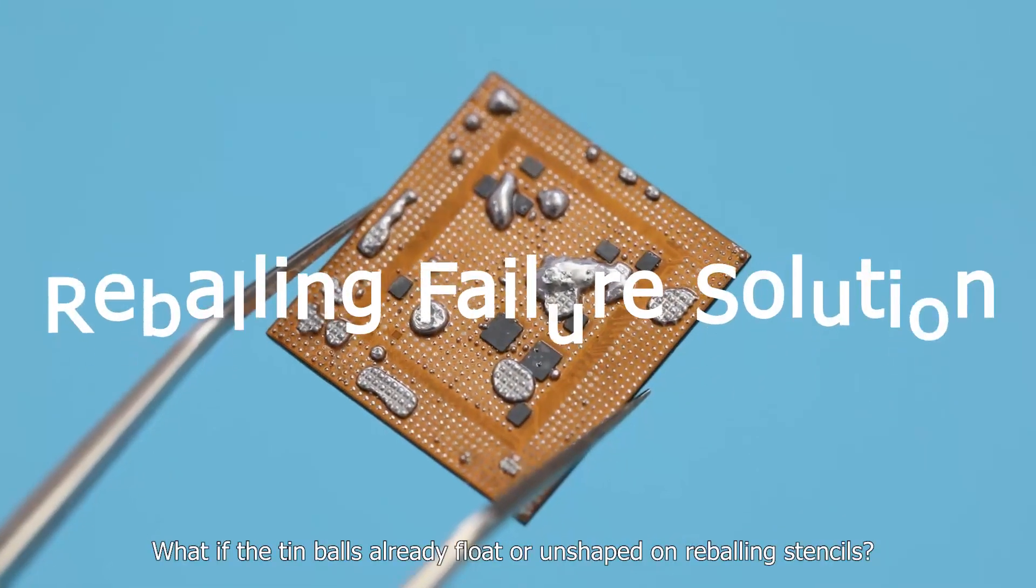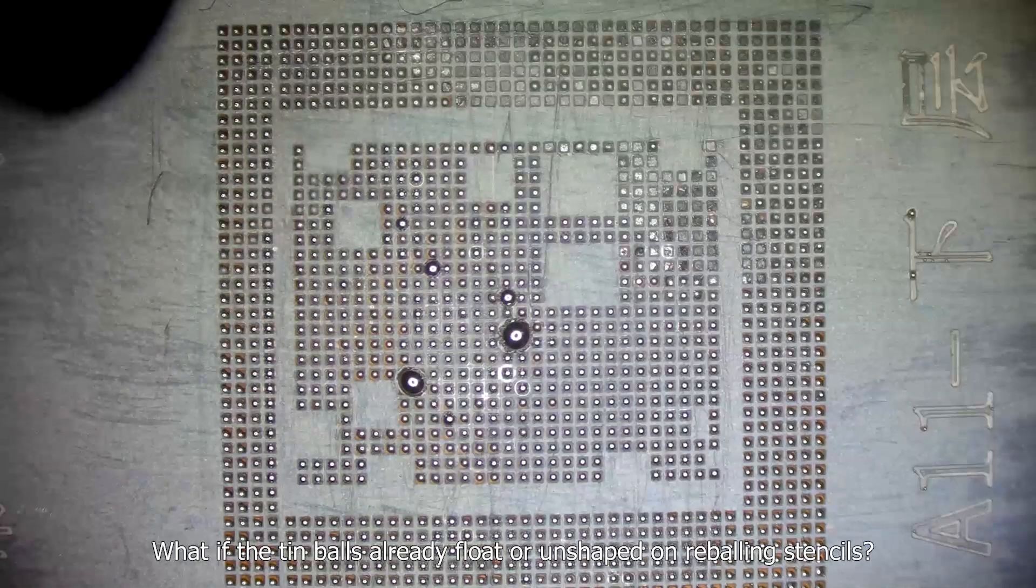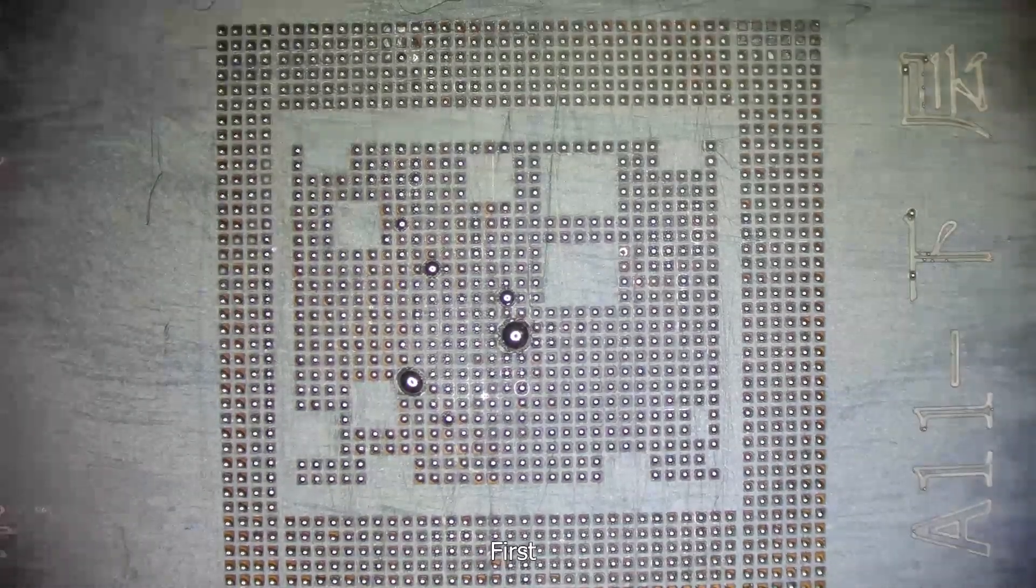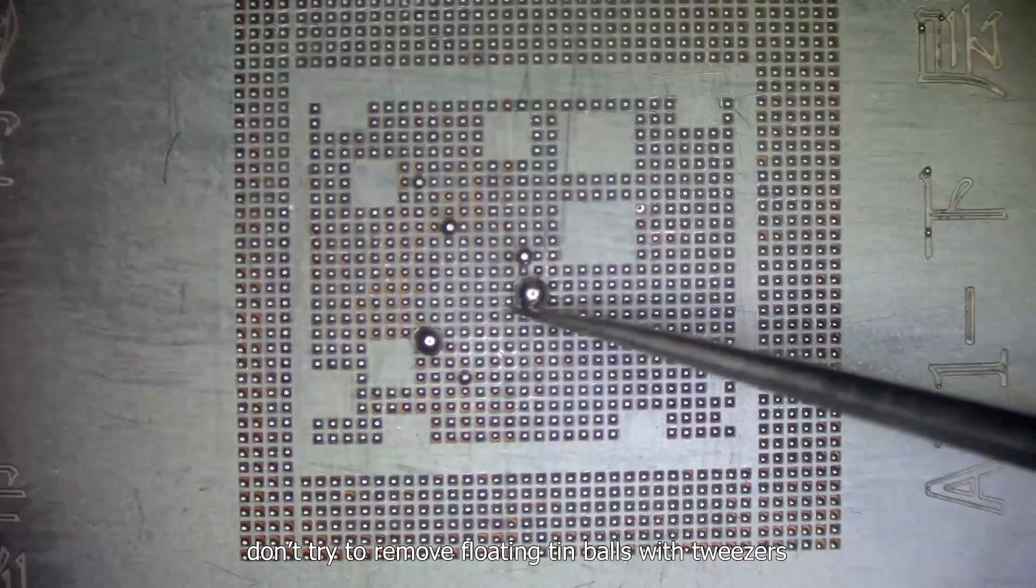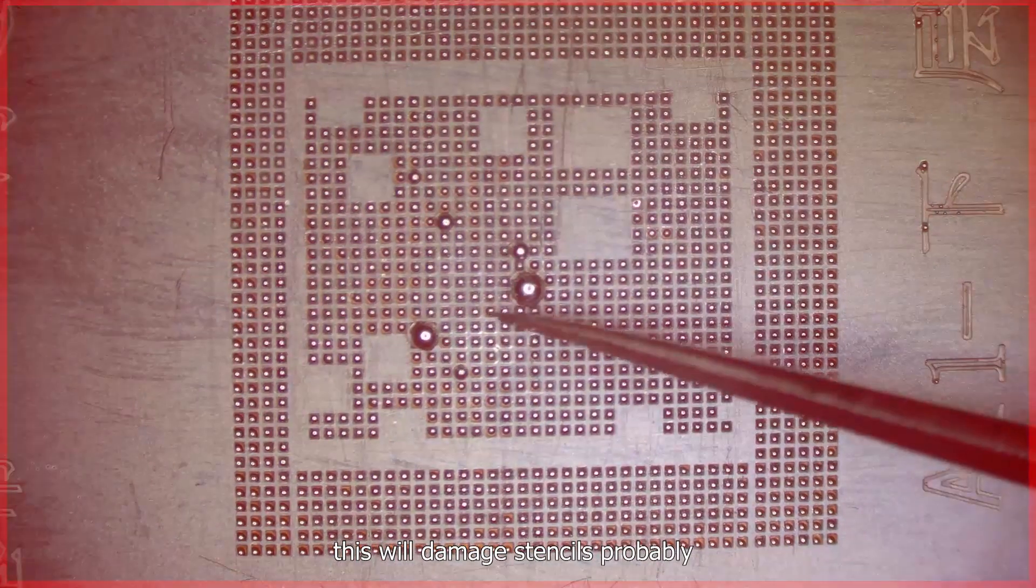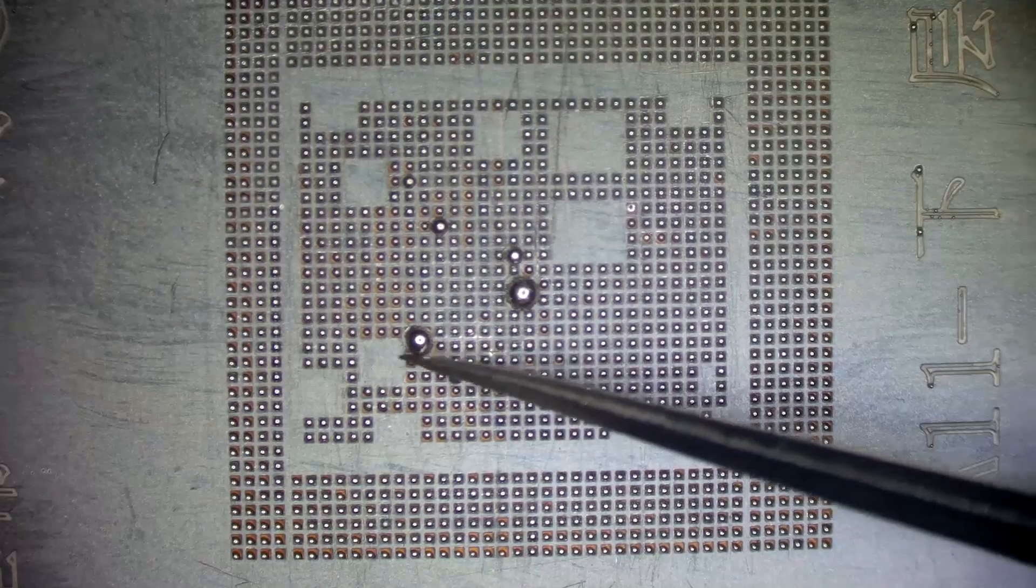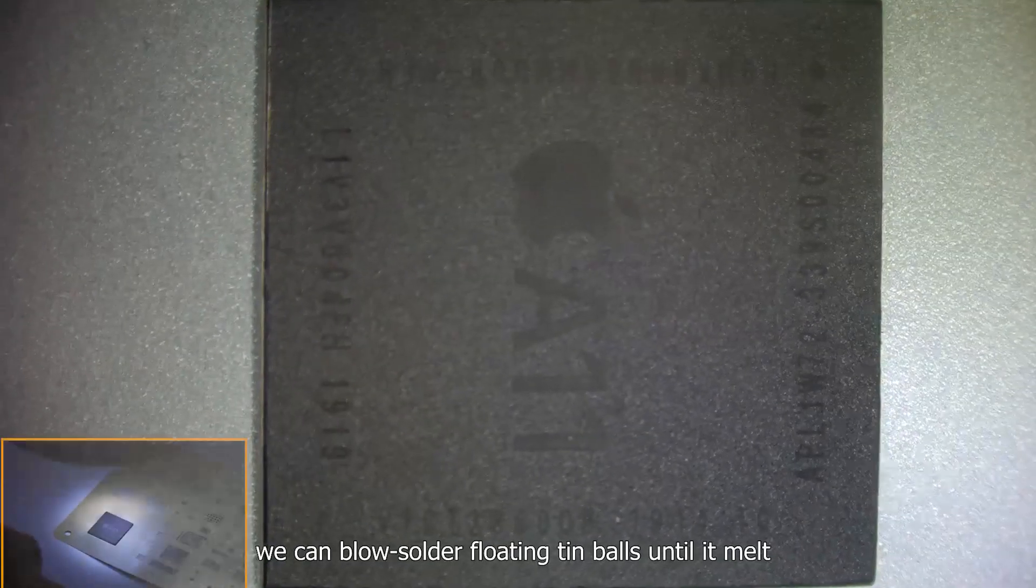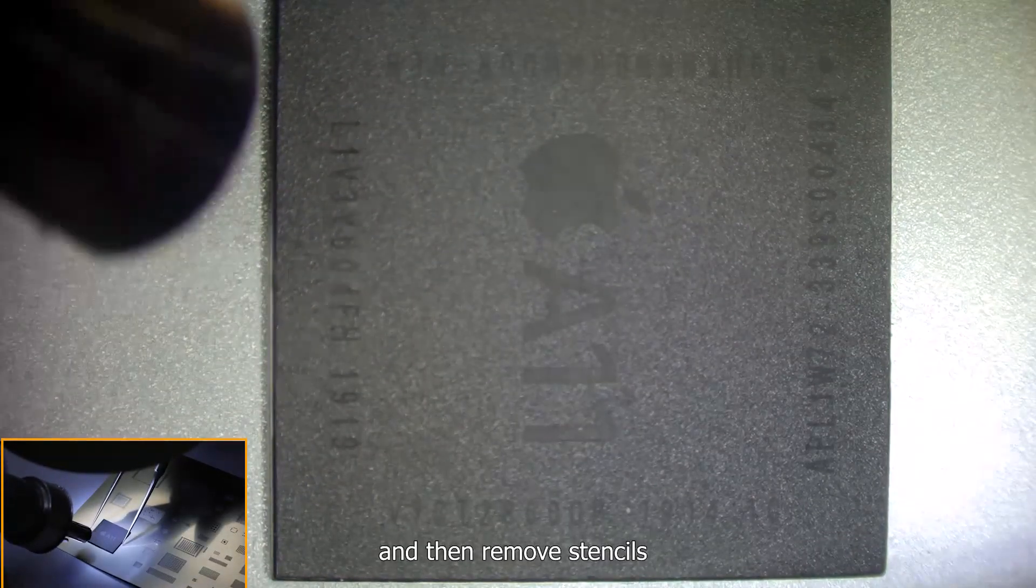What if the tin balls already float or are unshaped on reballing stencils? First, don't try to remove floating tin balls with tweezers. This will probably damage stencils. Next, we can blow solder floating tin balls until they melt, and then remove stencils.